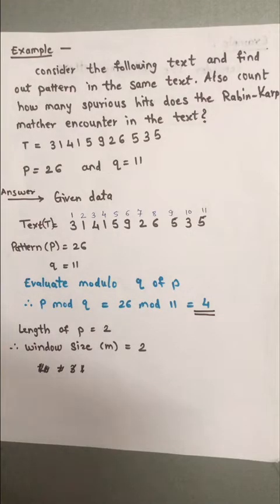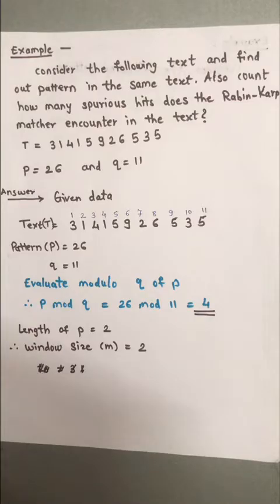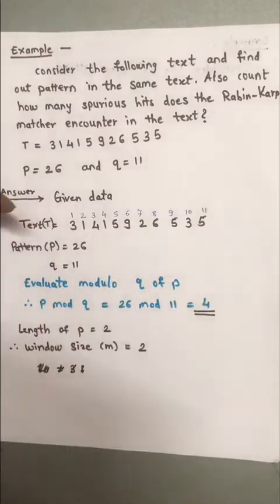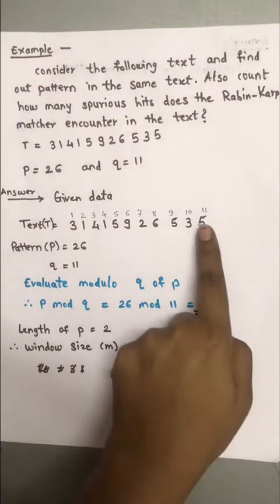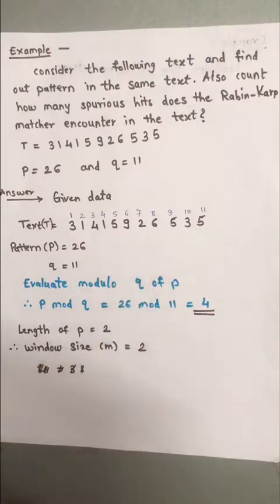Consider this example: find the pattern in the given text, and count how many spurious hits the Rabin-Karp matcher encounters. The text is given, the pattern is 26, and Q is also given. Q is a prime number used to calculate the modulus, which is required to calculate hash values. Here the text has 11 indexes, pattern is 26, and Q is 11.